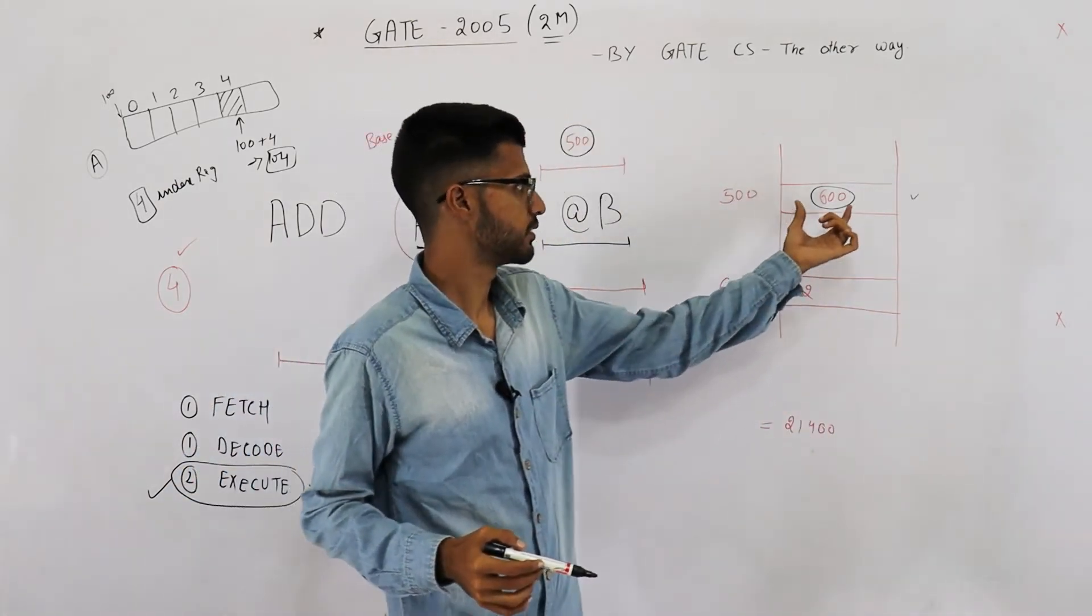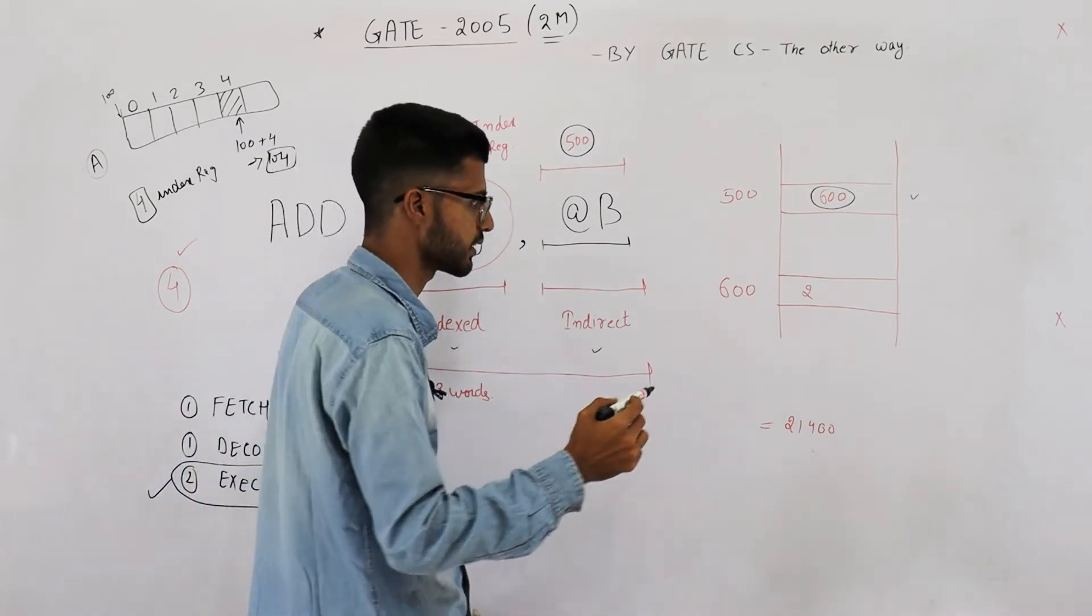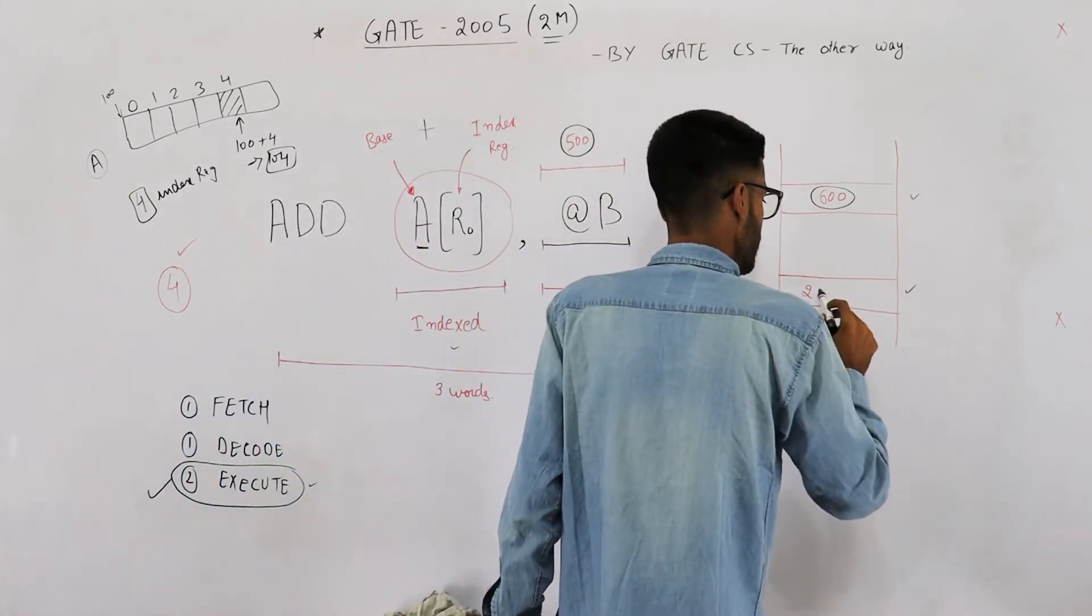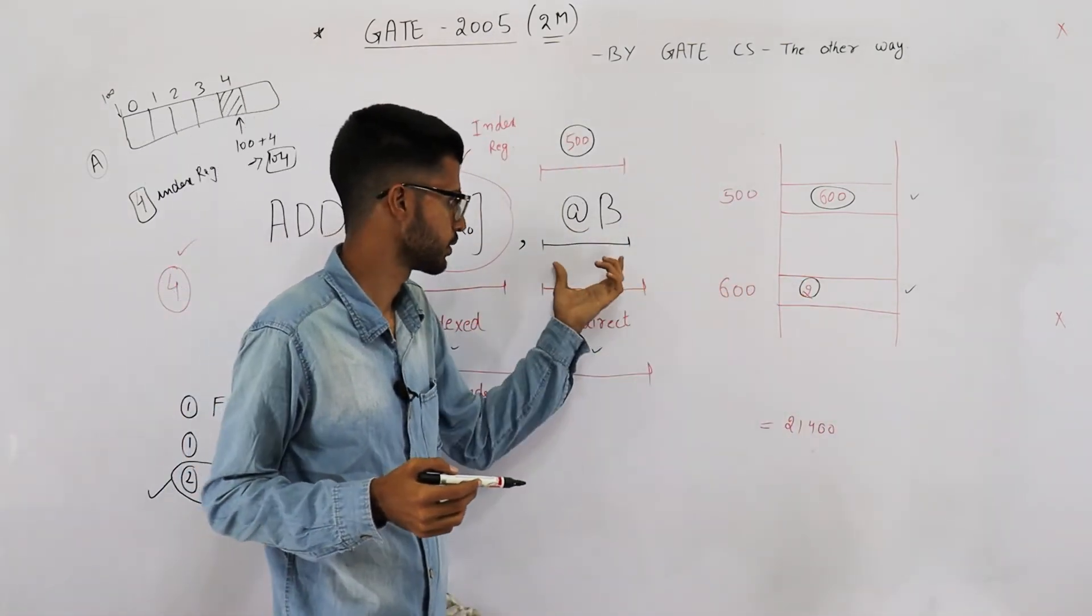Now whatever you have fetched, which is 600, is the effective address. Then you go to the effective address, that means here, and get the actual operand. So actual operand in this case is two, as I've shown here.